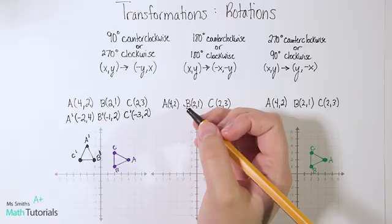Now let's look at the 180-degree rotation. It doesn't matter whether it's counterclockwise or clockwise — we end up at the same place. The rule is (x, y) becomes (-x, -y); we flip every sign. A becomes A prime: 4 flips to -4, and 2 flips to -2. For B prime, the 2 becomes negative and the 1 becomes negative. For C prime, the 2 becomes negative and the 3 becomes negative.